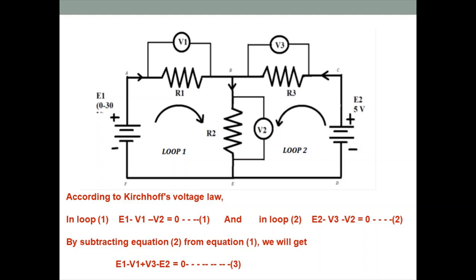Similarly, for the second loop, if we form the equation in the anticlockwise direction, the battery E2's potential is assumed positive. Voltage across R3 is represented as minus V3 because resistance drops potential, and voltage across R2 is also represented as minus V2. So the equation for loop 2 is: E2 − V3 − V2 = 0.